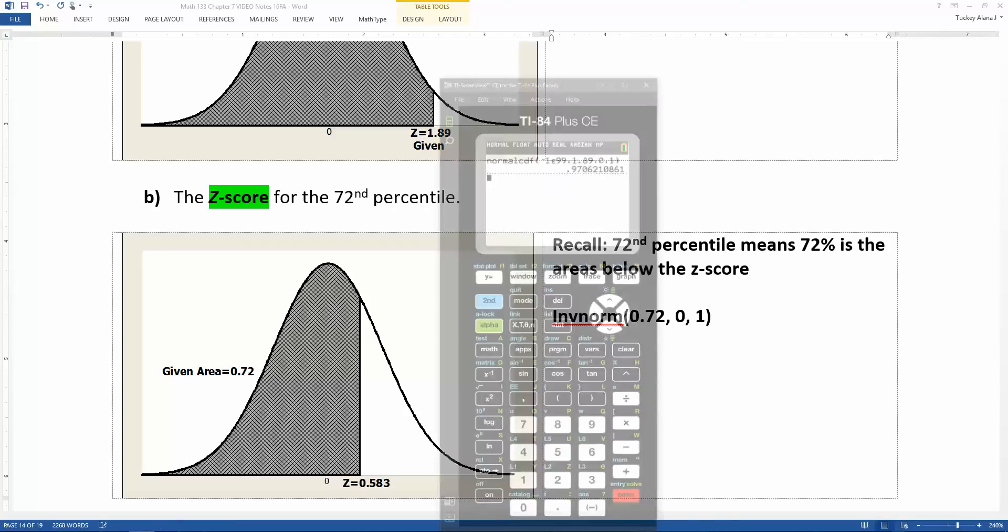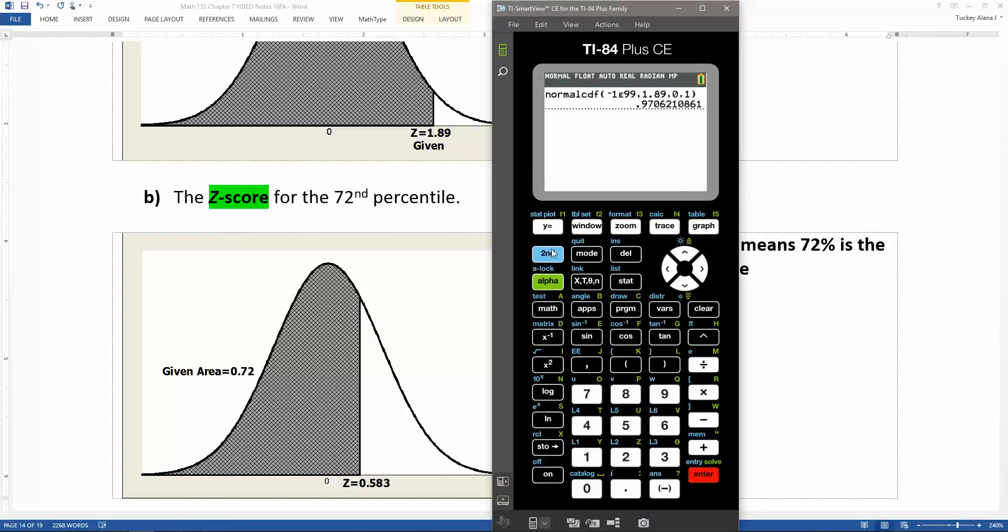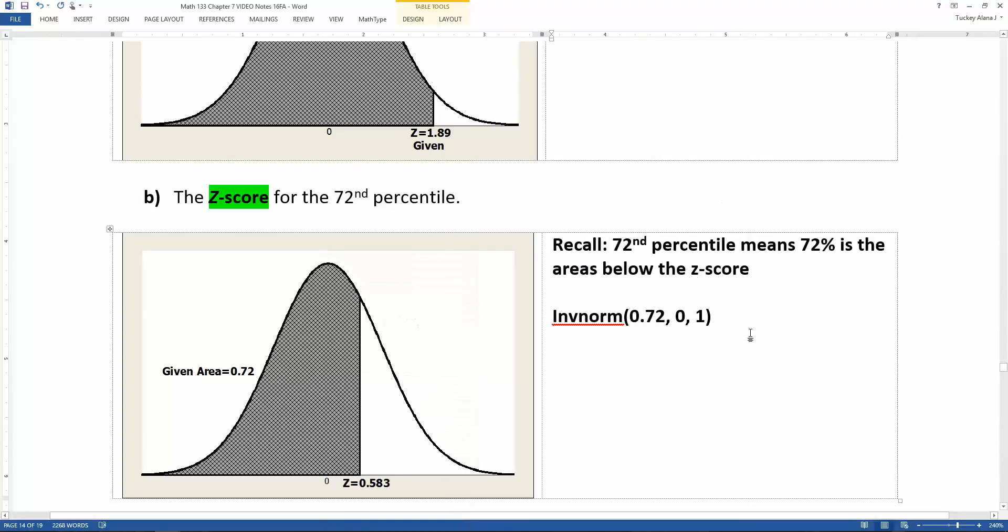So I'm going to grab the calculator, and this time I'm going to do inverse norm. So second distribution. This is an inverse norm problem, because it's a percentile problem. So 0.72, 0, 1, paste, enter, enter, and I get 0.5828.